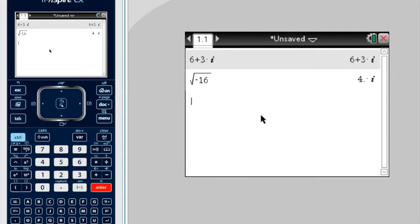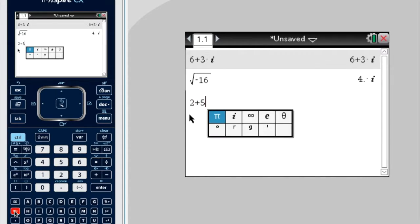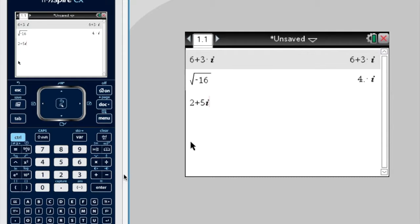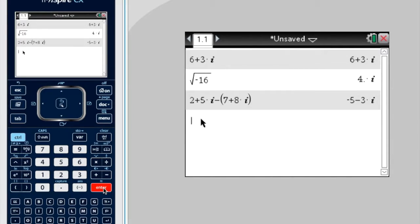Now we can do things like addition, subtraction, multiplication, division. We can do 2 plus 5i minus—if I want to minus, obviously I'm going to use brackets—7 plus 8i, enter. And there's the answer.